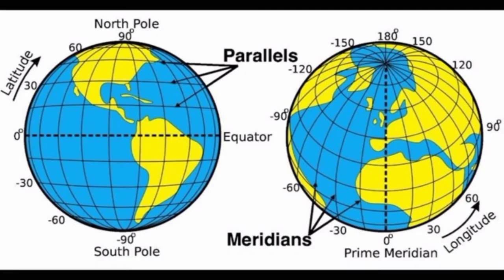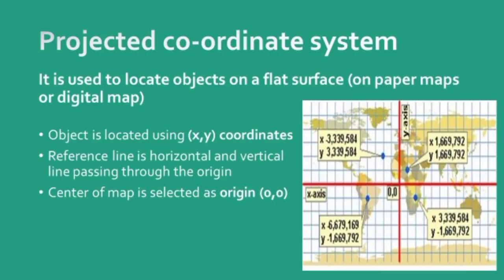Here is another image for better understanding of the geographical coordinate system. The second coordinate system is the projected coordinate system, used to locate objects on a flat surface — like drawing on paper with four quadrants using x and y coordinates. Objects are located using x and y coordinates. The reference lines are a horizontal line and a vertical line, with the center of the map selected as the origin (0, 0).